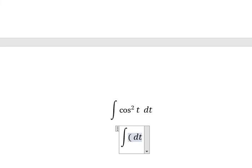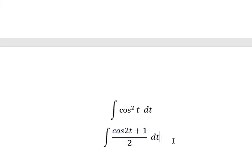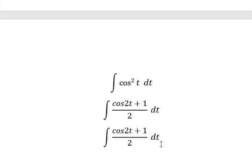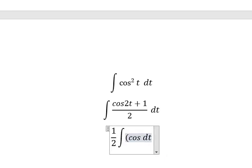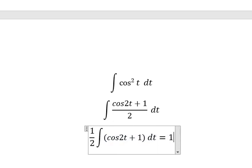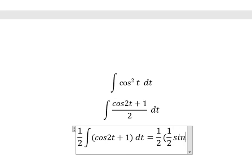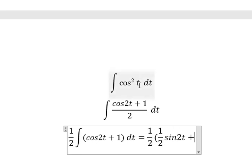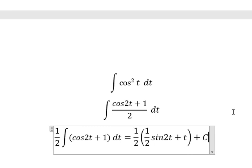This one we have cos 2t plus 1 over 2. And now I will put number 2 outside. The integral of cos 2t, that's about one over two sine 2t, and number one, that's about t. And we put c in here.